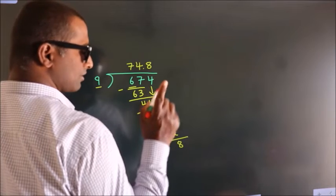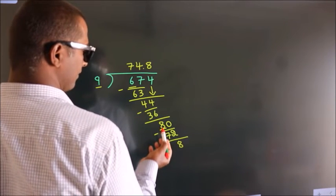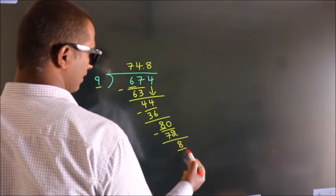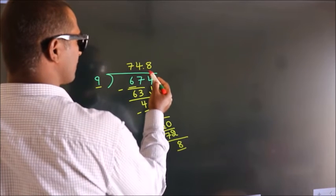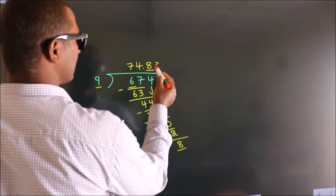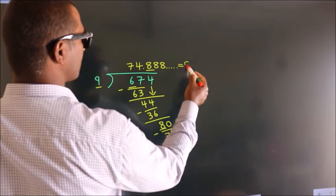Now you observe, we had 8 here and we got 8 again. That means this number keep on repeating. So this is our quotient.